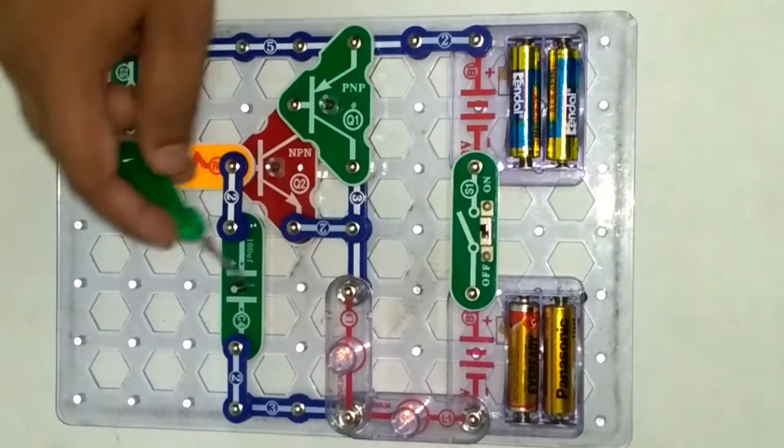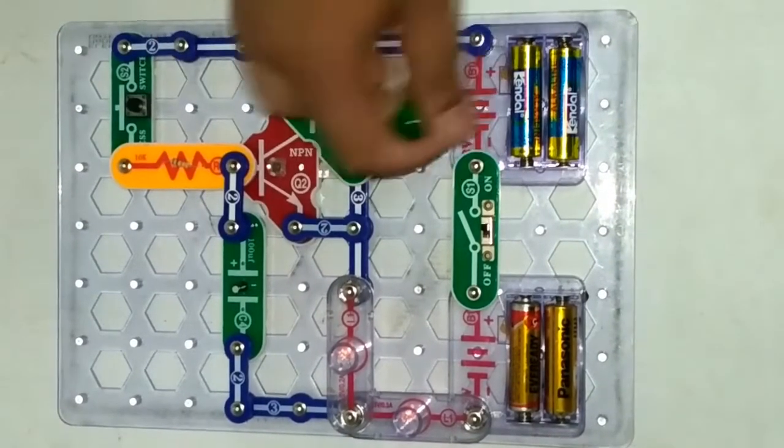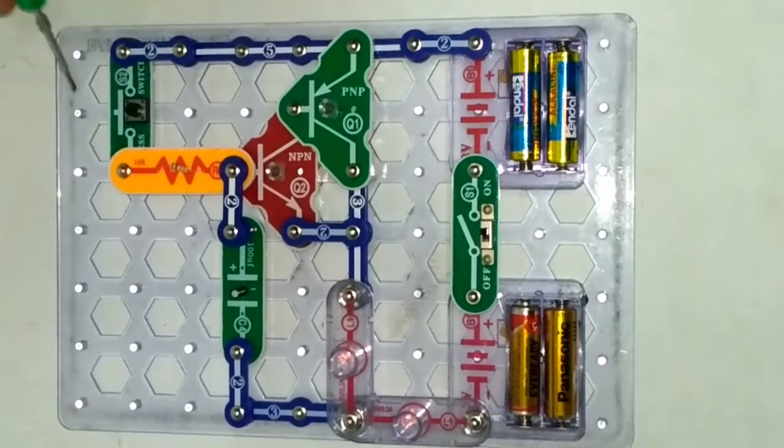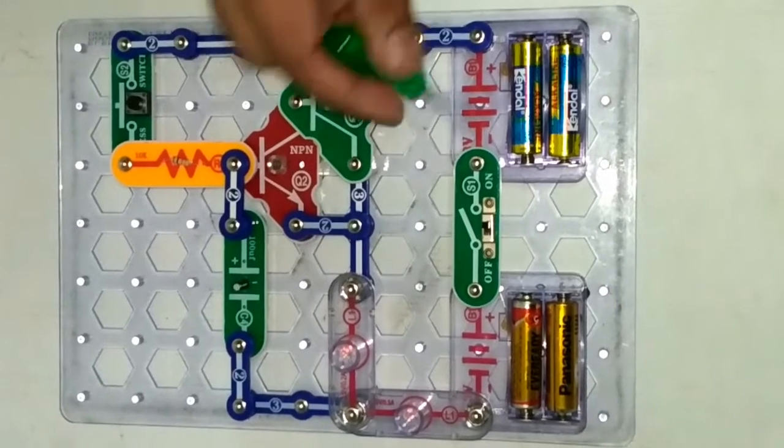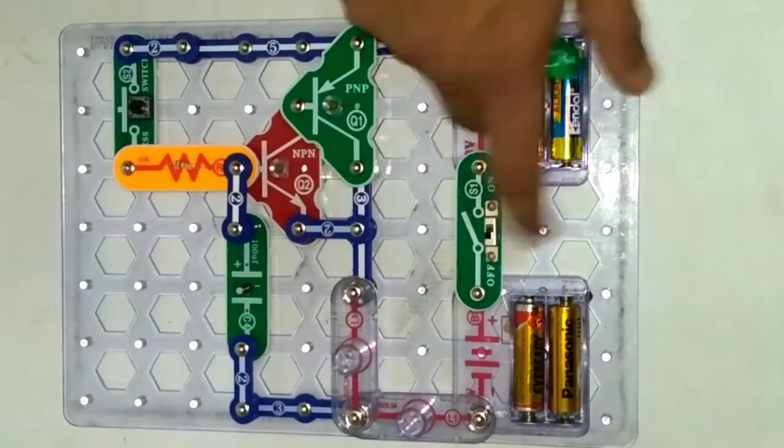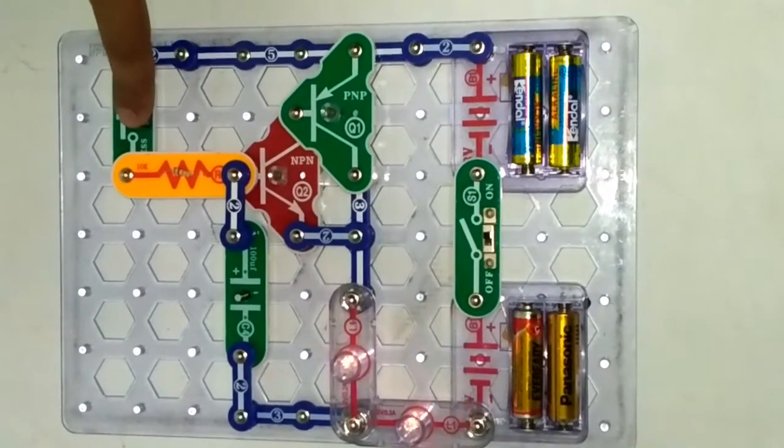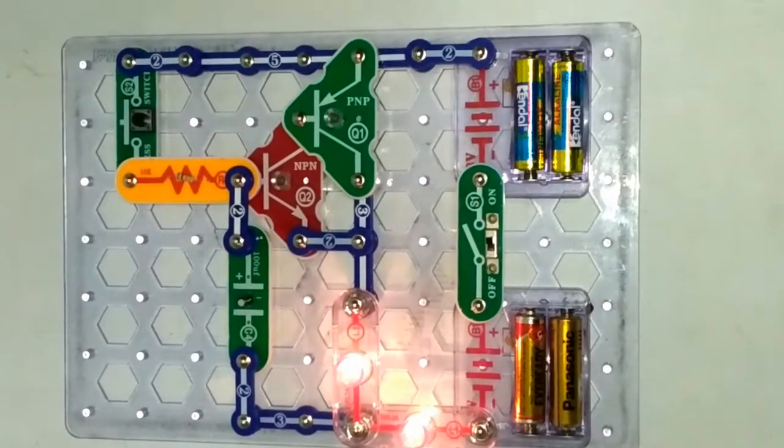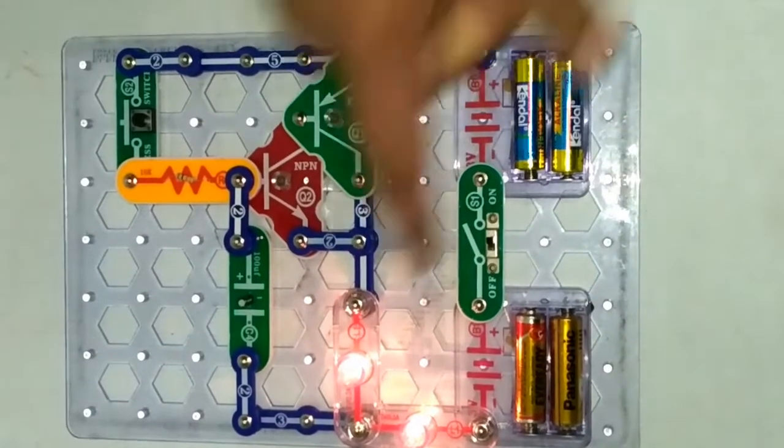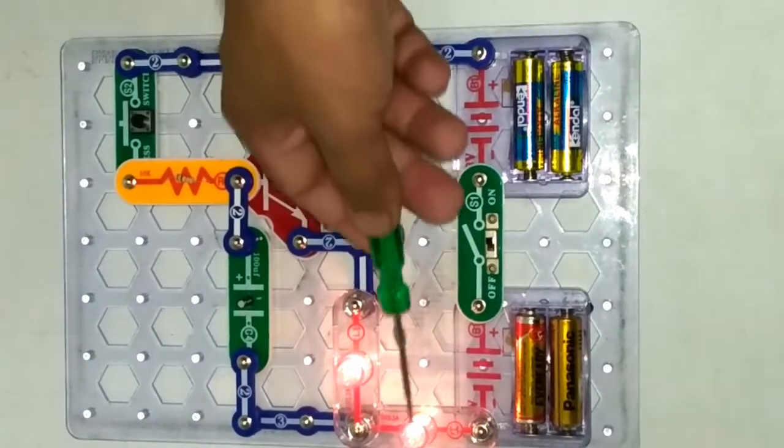Now what happens when I switch on S1? When I switch on S1 and press S2, you can see after I release the switch, the bulb is still glowing. Now why is it so?